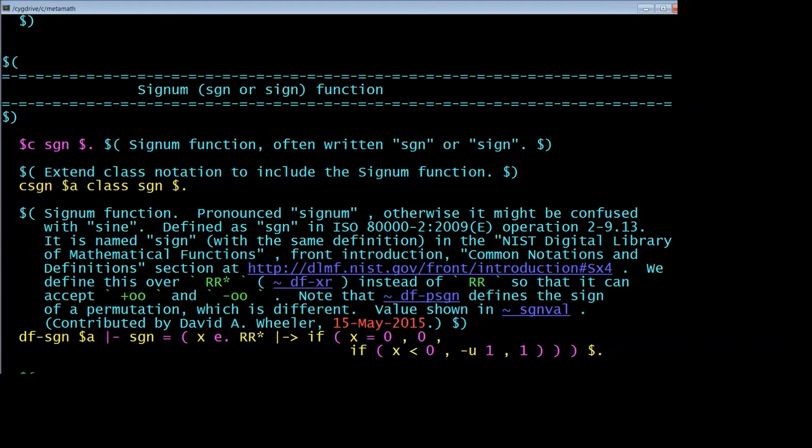You'll notice that x has to be a member of rr star. That's the decision I made. rr star is the reals, also including plus and minus infinity. I've decided that sgn would be useful to apply to plus and minus infinity.